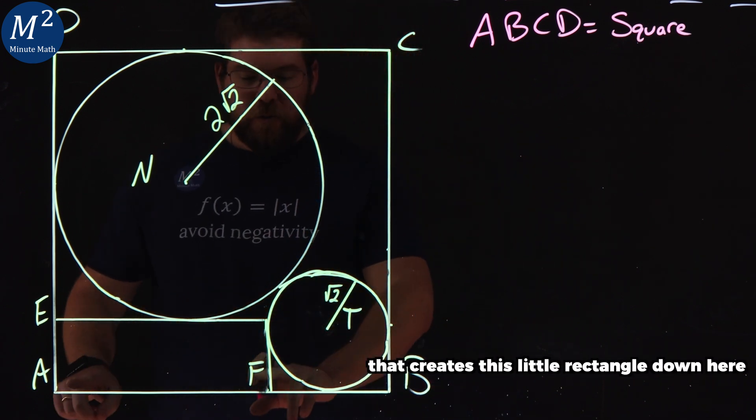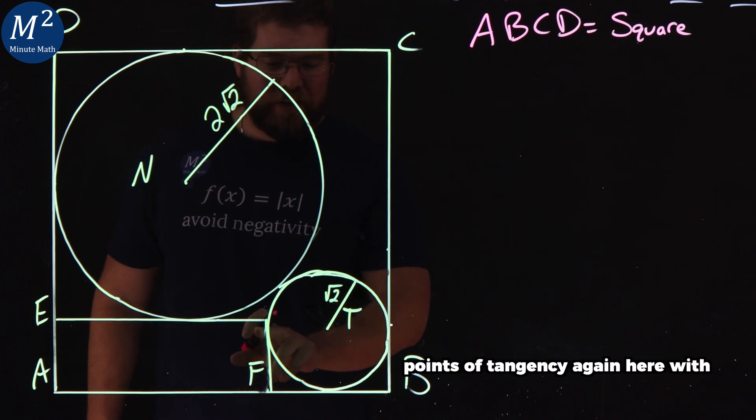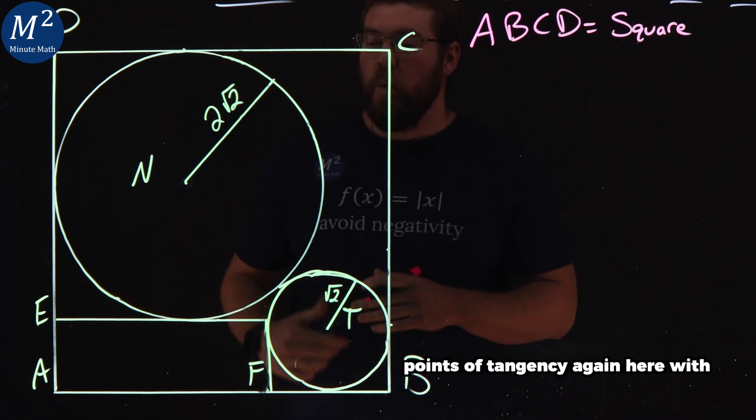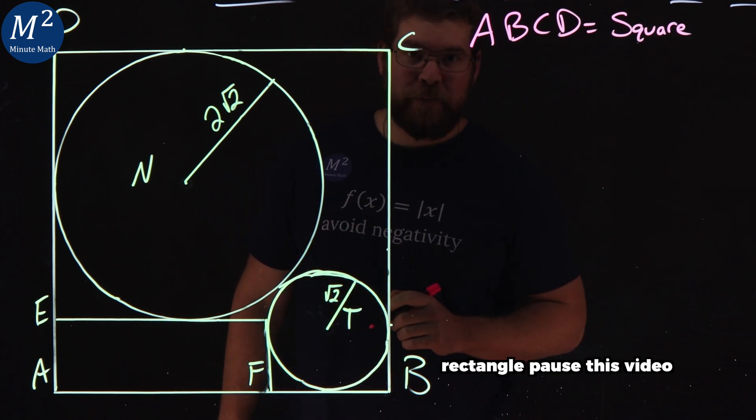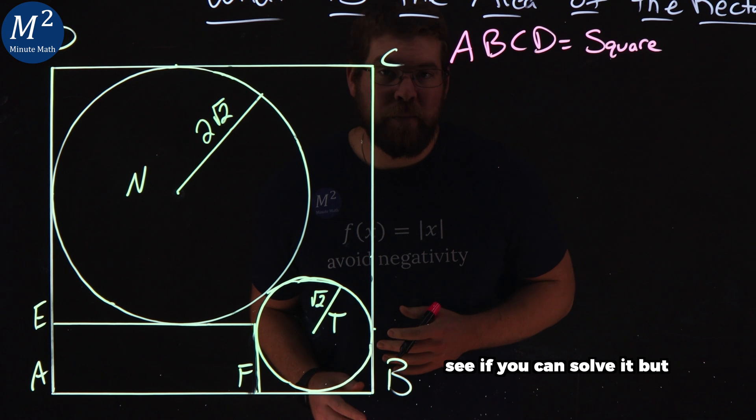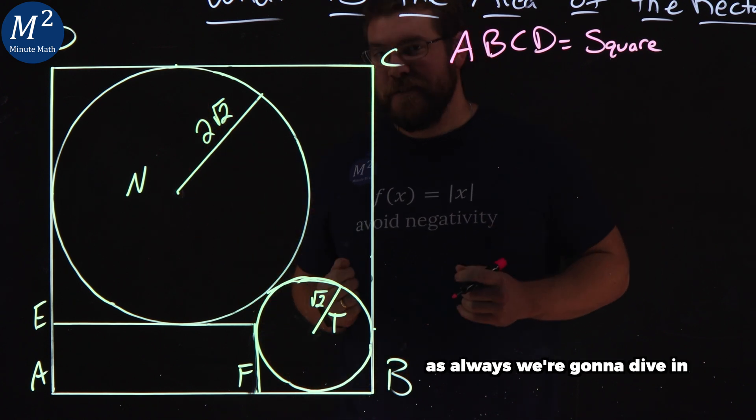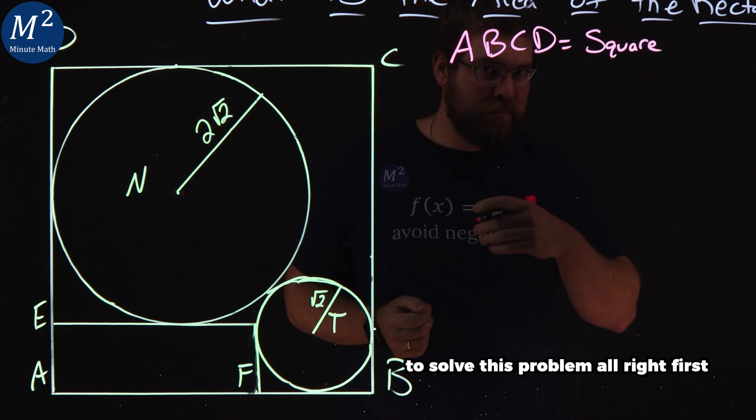And that creates this little rectangle down here, points of tangency again here. With just this information, what is the area of this lovely little rectangle? Follow this video to see if you can solve it, but as always we're going to dive in and I'm going to show you a way to solve this problem.